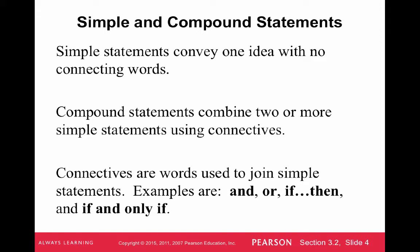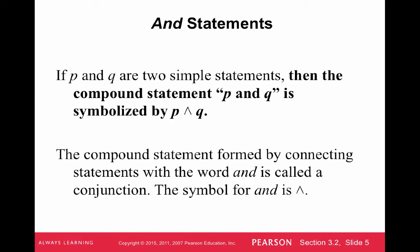The connectives are words like and, or, if-then, and if-and-only-if. These are the four connectives we're going to look at in 3.2. Starting with and statements: if P and Q are two simple statements, then the compound statement P and Q is symbolized by P ∧ Q — basically an upside-down V. This compound statement formed by connecting statements with the word and is called a conjunction.